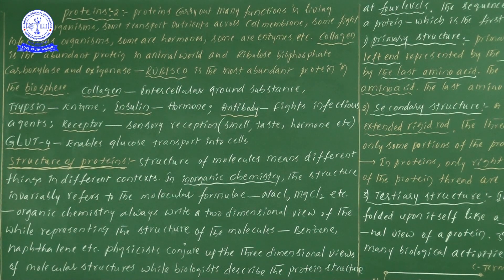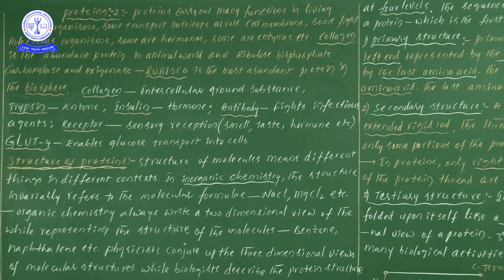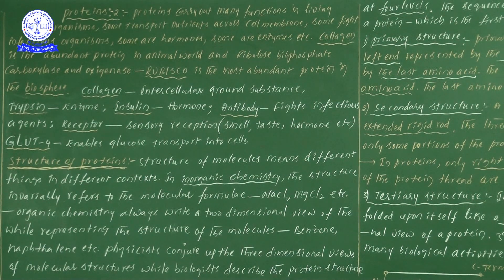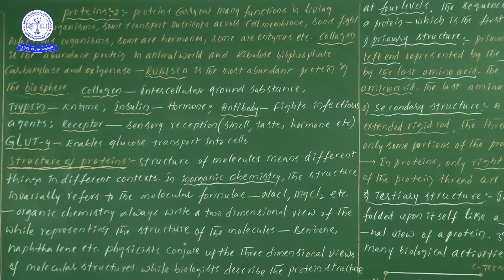Now let us start to discuss the structure of proteins. Depth levels will be increased, so listen carefully. The structure of molecules means different things in different contexts. In inorganic chemistry, organic chemistry, physics and biology — we will cover four different subjects. In order to explain the structure of any kind of molecule, each subject has its own approach.